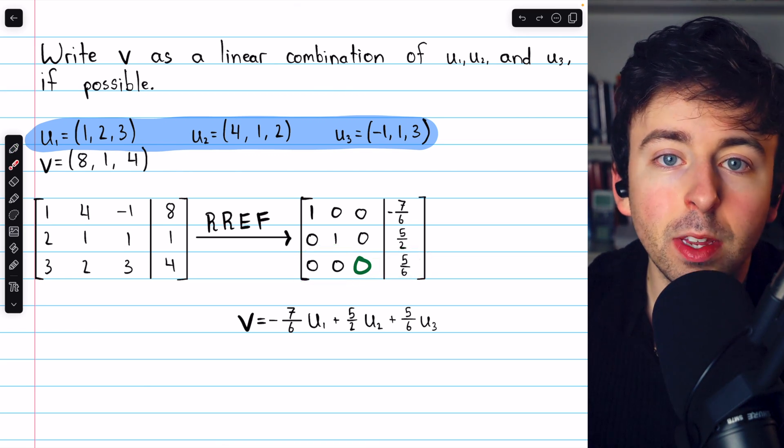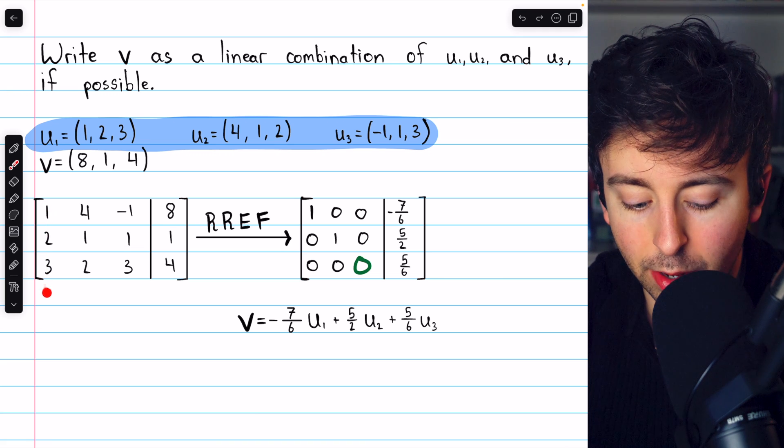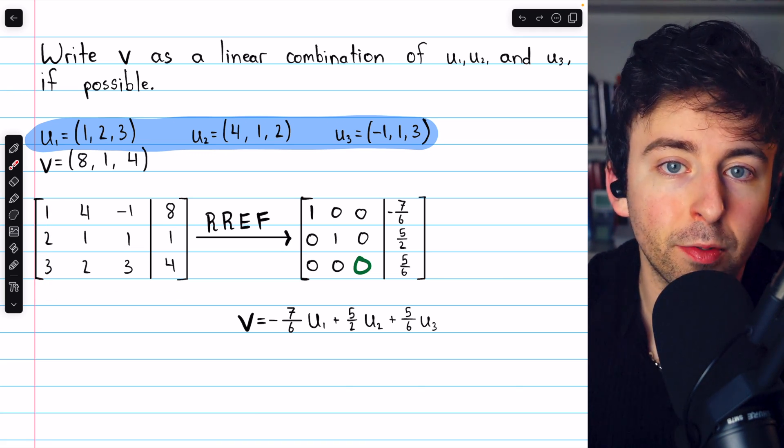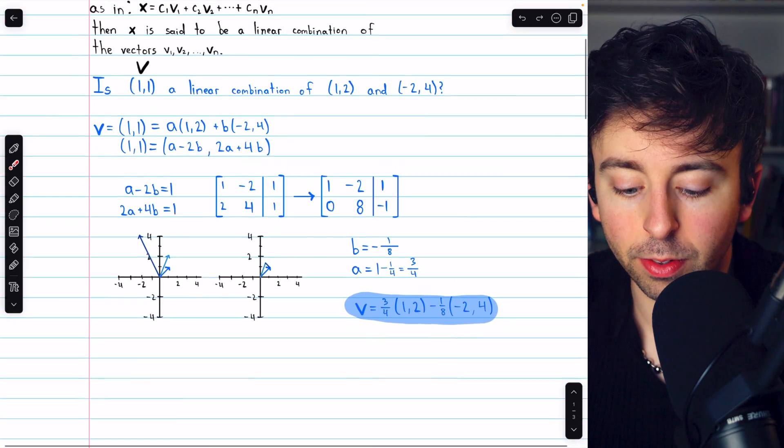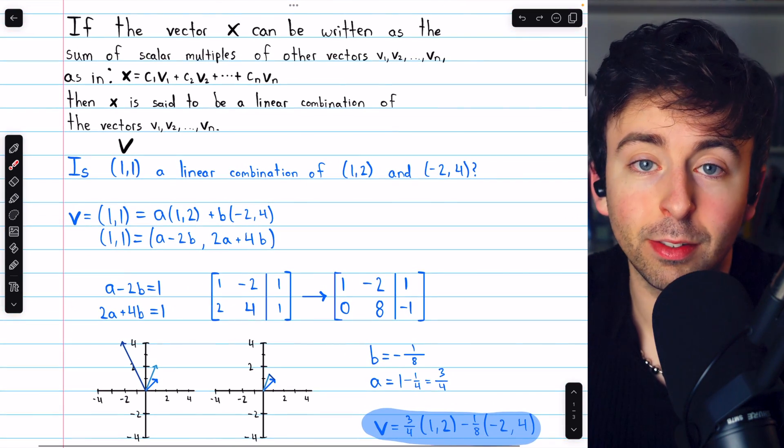This method could easily be adapted for vectors in R4. You just have a four-by-four matrix instead of a three-by-three one. That's how you write a vector as a linear combination of others in Rn, if it's possible.